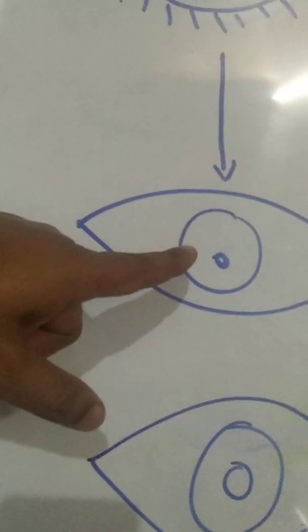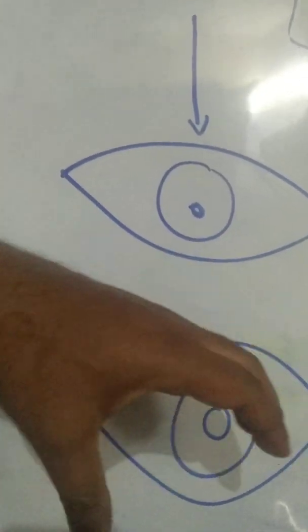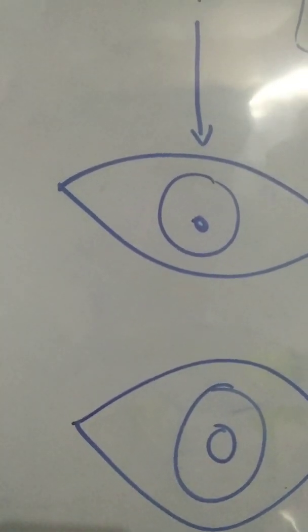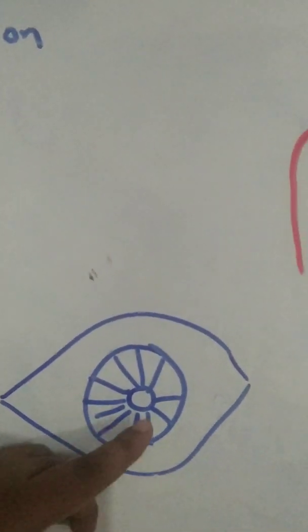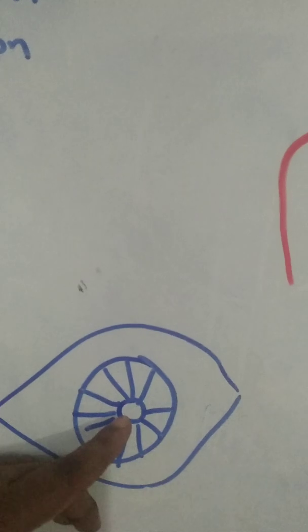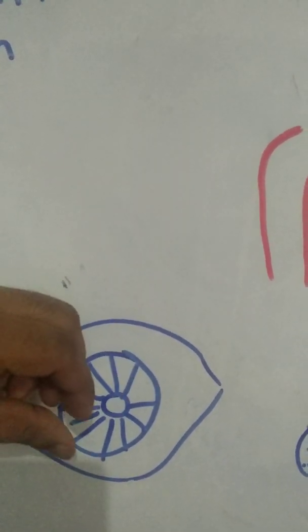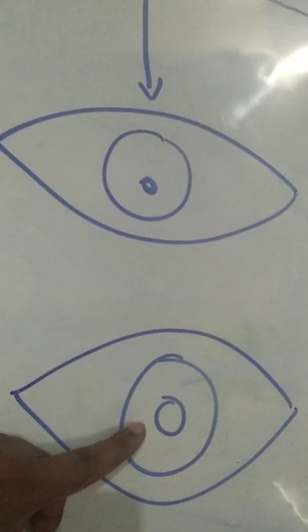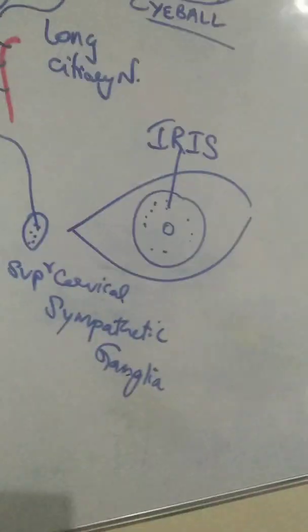Will the action be constriction of the pupil, narrowing it, or will it enlarge the pupil? The muscle takes origin from the periphery of the iris and goes towards the pupillary margin at the center. When it contracts, the muscle shortens, so the pupil will dilate. That is the correct action — the pupil dilates.